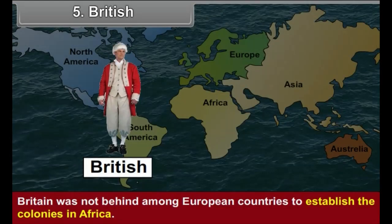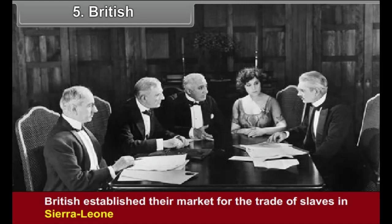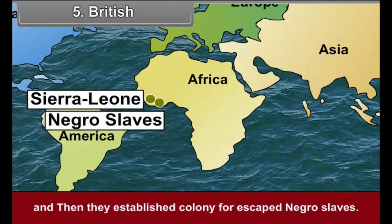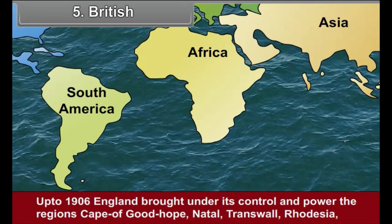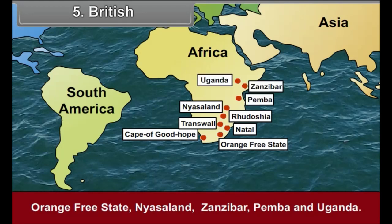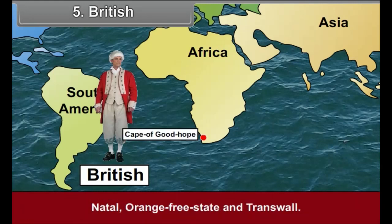Britain was not behind among European countries in establishing colonies in Africa. The British established their market for the slave trade in Sierra Leone and then established a colony for escaped Negro slaves. Up to 1906, England brought under its control the regions of Cape of Good Hope, Natal, Transvaal, Rhodesia, Orange Free State, Nyasaland, Zanzibar, Pemba and Uganda. In 1920, the British established a Union territory combining four colonies: Cape of Good Hope, Natal, Orange Free State and Transvaal.